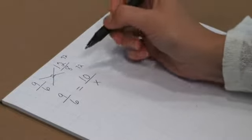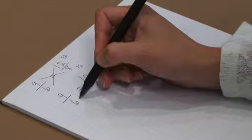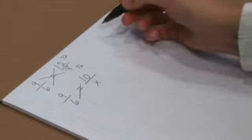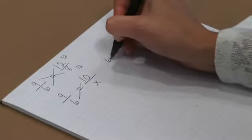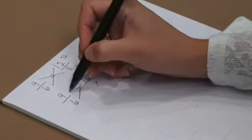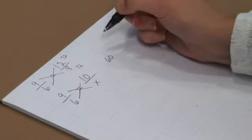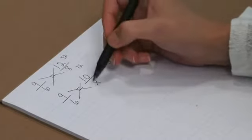Again, the students will cross multiply. So we have 6 times 10, which is 60, and then we have 9 times x, or 9x. And we know that 9x has to also equal 60.